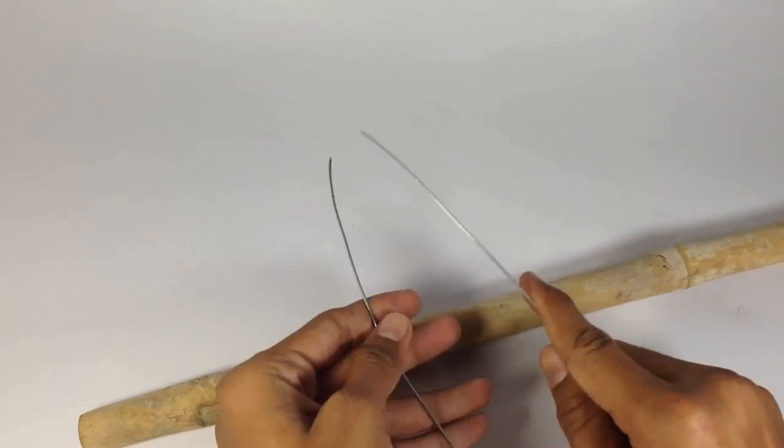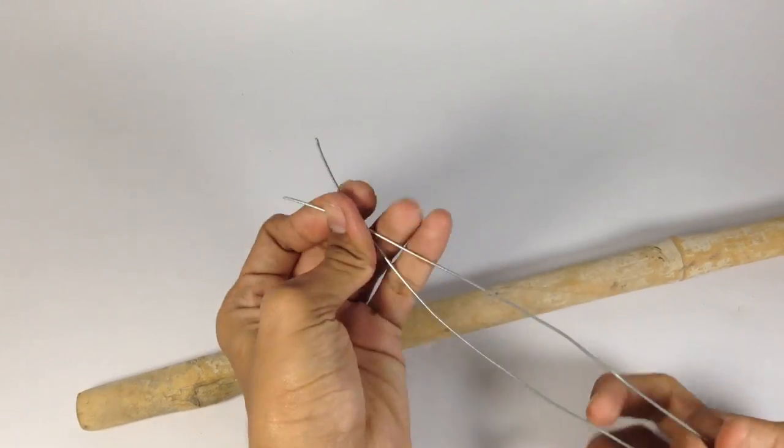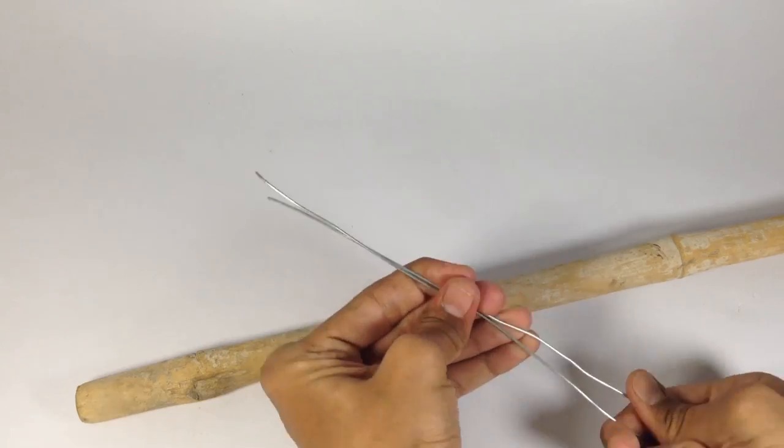Now fix the wrapping wire on one end of the stick and attach the earphone as shown in the video.